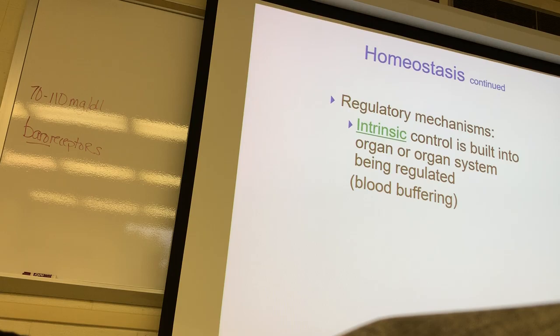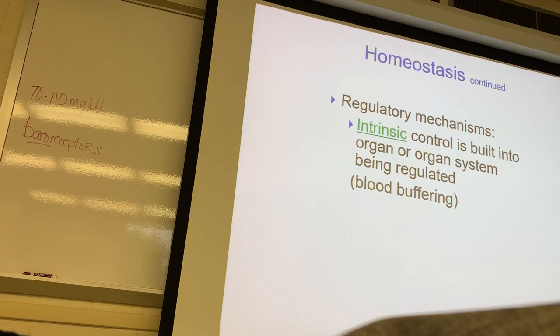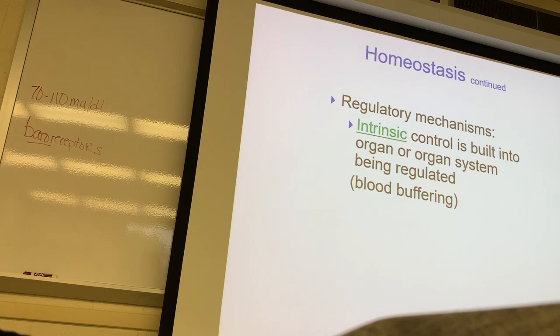Any questions about negative feedback loops? Those three examples — temperature, blood sugar, and blood pressure — are the ones we covered. This can be a harder concept, but once you understand it you'll recognize it throughout the course. Anytime you see a negative sign with a circle around it in a process diagram, that's a negative feedback loop. In fact, most homeostatic systems in the body — about 99% — are maintained by negative feedback loops. Homeostasis is maintained by negative feedback loops, and there are also positive feedback loops we'll discuss as well.